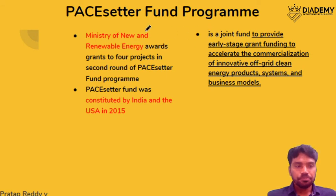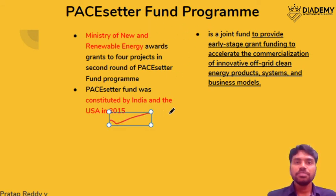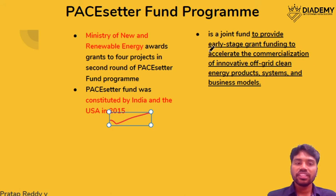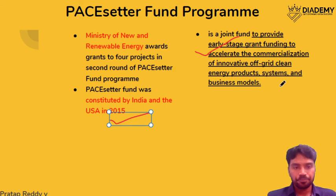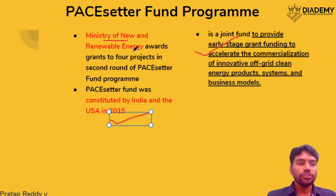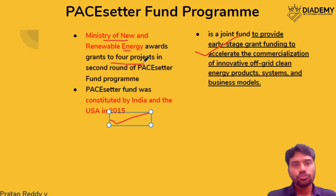The Pay Settler Fund Program is a kind of fund set up in association with the USA in 2015. It provides funds for early stage off-grid green programs — for example, off-grid solar panels used for energy generation. The Ministry of New and Renewable Energy has given grants for new such projects under this scheme.